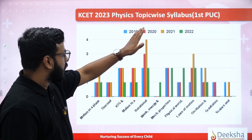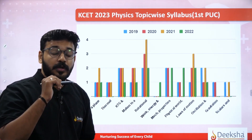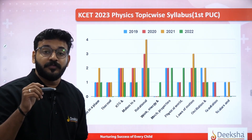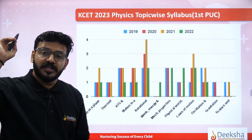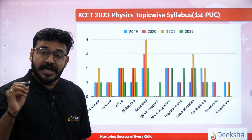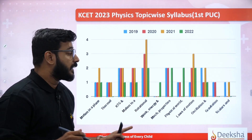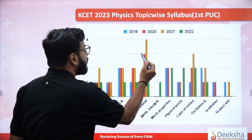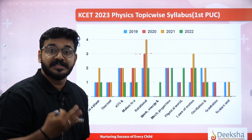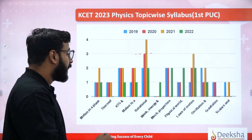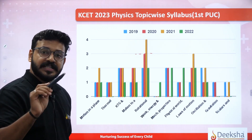In first PUC, rotational motion is very important. There are many application-level questions — moment of inertia, perpendicular axis theorem, parallel axis theorem are very favorite questions. Rotational chapter — every version at least one or more questions come. Out of 100 questions in first PUC, rotational chapters are a top priority. Be very careful with this chapter.